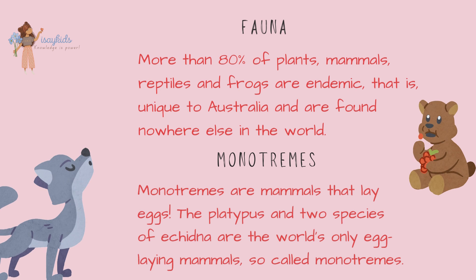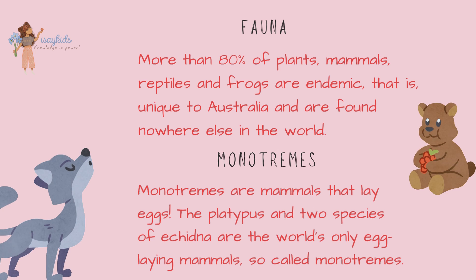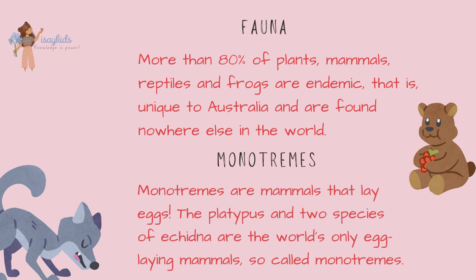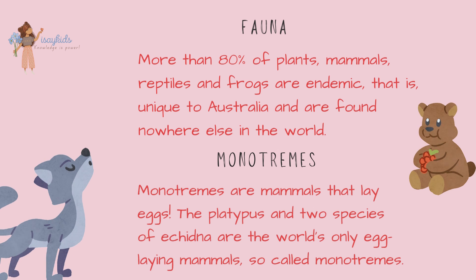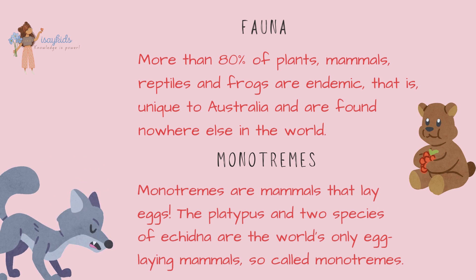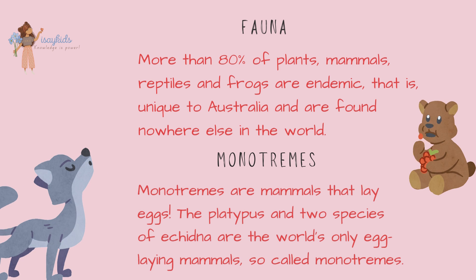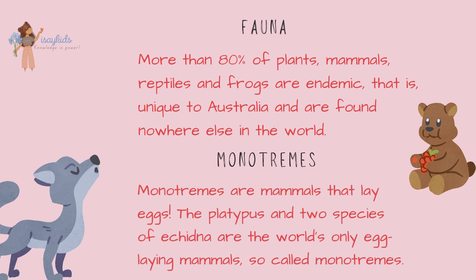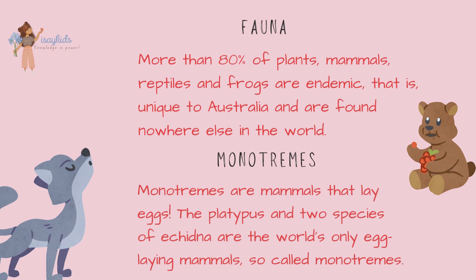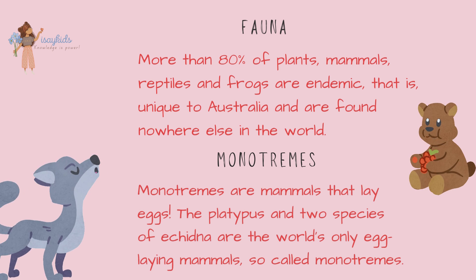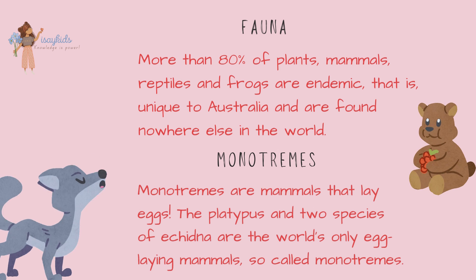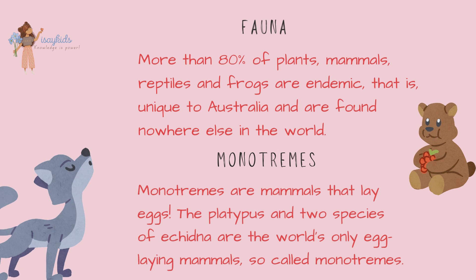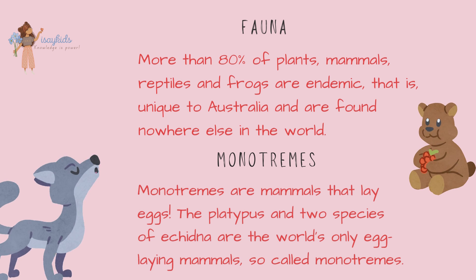Now let's talk about the fauna, or the animals, of Australia. More than 80% of plants, mammals, reptiles and frogs are endemic — meaning they are unique to Australia and found nowhere else in the world. Monotremes are mammals that lay eggs. The platypus and two species of echidna are the world's only egg-laying mammals, so-called monotremes.